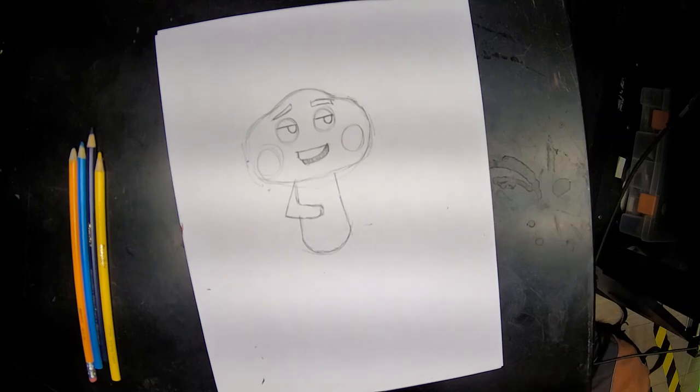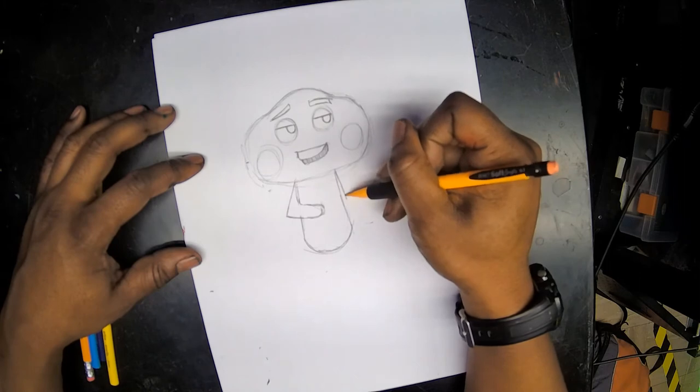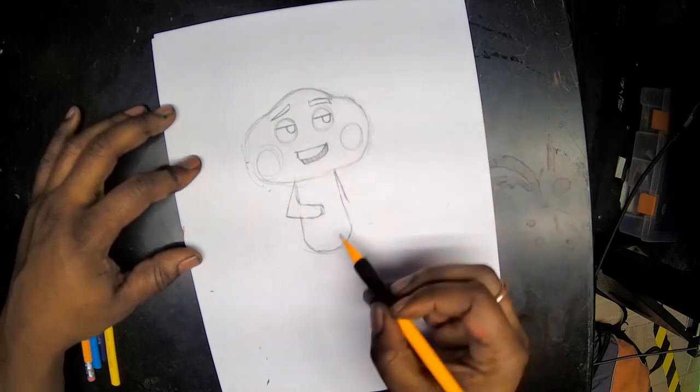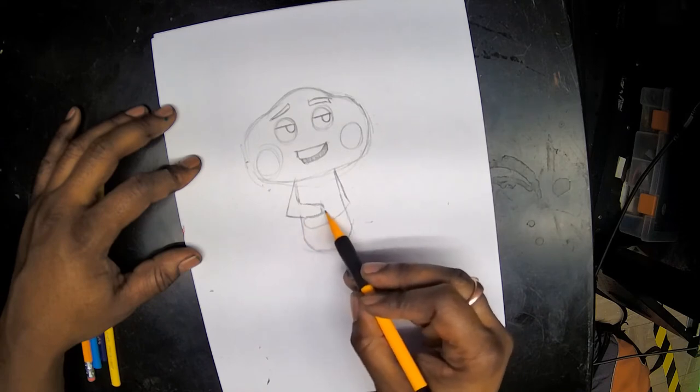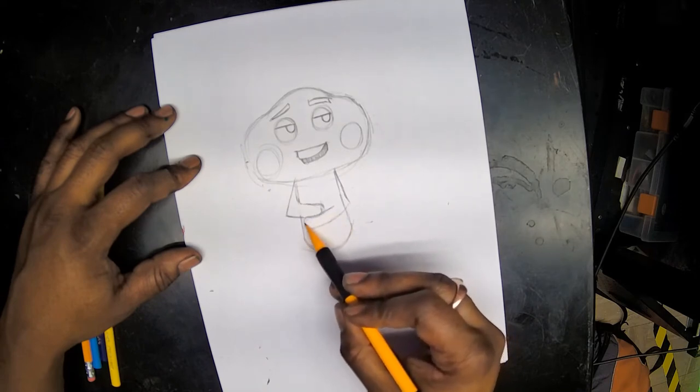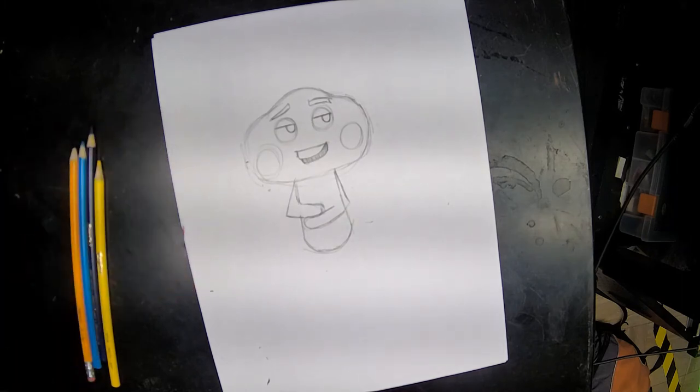Our other arm is going to come from under the head, go down past our first arm, and the hands are going to kind of cross.